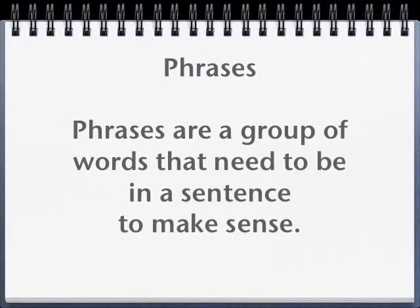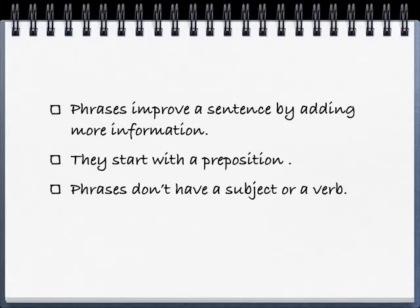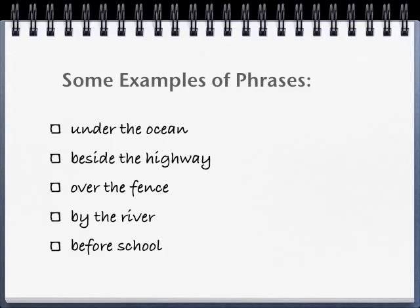Phrases. Phrases are a group of words that need to be in a sentence to make sense. Phrases improve a sentence by adding more information, they always start with a preposition, and phrases don't have a subject or a verb. Some examples of phrases would include: under the ocean, beside the highway, over the fence, by the river, and before school. Under, beside, over, by, and before are all prepositions.